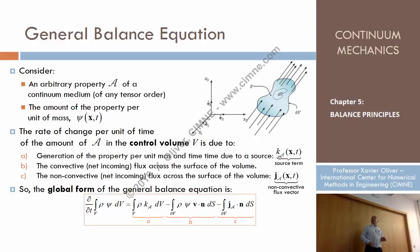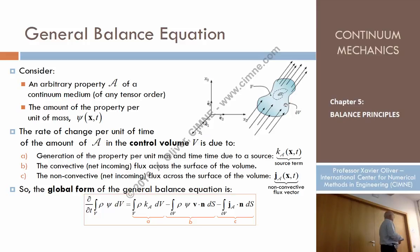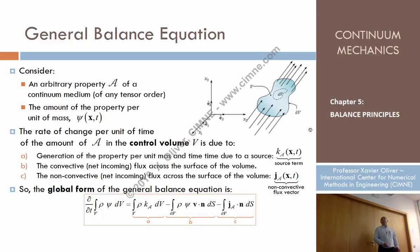Let's call it K — a function of space and other things — that expresses what is the amount of heat, for instance, that is generated due to the exothermic reaction of hardening in concrete at every particle. Let's assume that we know that.